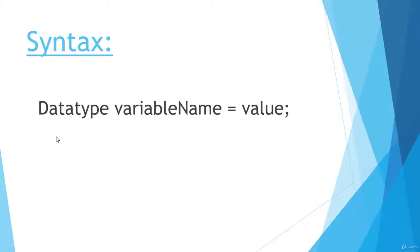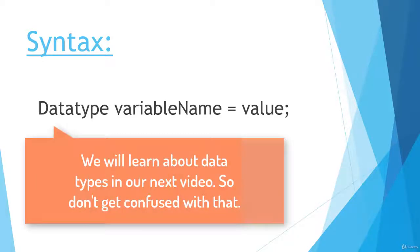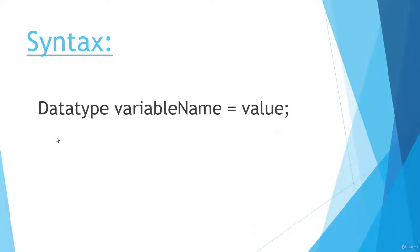Now look at its syntax. To declare a variable, you first have to type the data type — that is, which type of data you are going to store in your variable. After typing the data type, you have to type the name of the variable. You can write any name here, then put equals to, and then type the value which you want to store in that variable. This is the simple syntax of declaring a variable.